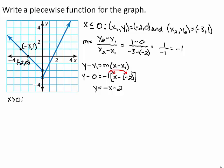When x is greater than 0, the graph passes through the points 2, 1 and 3, 3. Let x1, y1 equal 2, 1 and x2, y2 equal 3, 3.